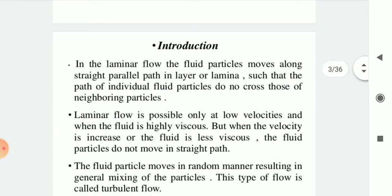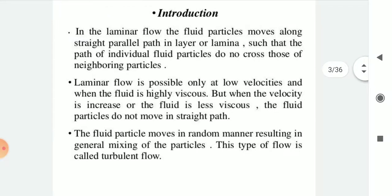In laminar flow, the fluid particles move along straight parallel paths in layers or laminae such that the paths of individual fluid particles do not cross those of neighboring particles. Laminar flow is possible only at low velocities and when the fluid is highly viscous. But when the velocity is increased or the fluid is less viscous, the fluid particles do not move in straight paths. The fluid particles move in a random manner resulting in general mixing of the particles. This type of flow is called turbulent flow.